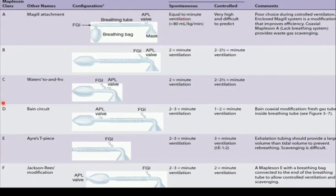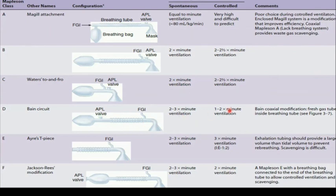Mapleson circuit D is ideal for controlled ventilation. In Mapleson D, the fresh gas inlet is close to the patient, while in Mapleson A, the fresh gas inlet is away from the patient and the APL valve is close to the patient. During spontaneous ventilation, the APL valve allows exhaled CO2 to pass out. During controlled ventilation, it allows pressure to build up inside the circuit — that's why Mapleson D is ideal for controlled ventilation and Mapleson A for spontaneous ventilation. The Bain circuit is a modification of the Mapleson D class.